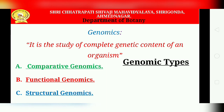Genomics is the study of the complete genetic content of an organism. More specifically, it is the study of the molecular organization of genomes, the information they contain, and the encoded gene products. Genomics has various types: comparative genomics, functional genomics, and structural genomics.